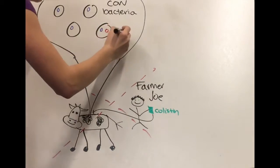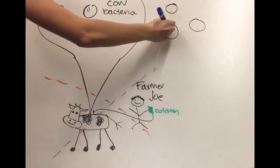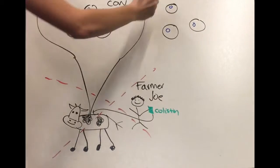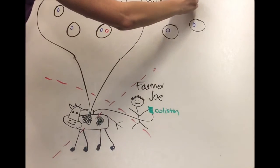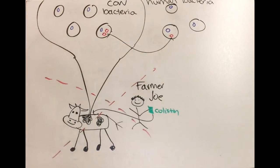Well, turns out, a bacterium like Fred that was living in livestock and developed colistin resistance could also make a copy of his MCR1 plasmid and give it to other bacterial populations, such as populations that can infect people. That's how we get infectious bacteria with the MCR1 gene, like Fred and his friends, in the first place.